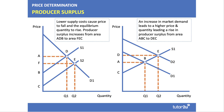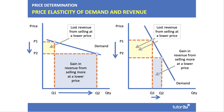In the first example here there's been an outward shift of supply caused by perhaps a cost-reducing innovation. On the right hand side, demand has shifted out and producers gain an increase in producer surplus.